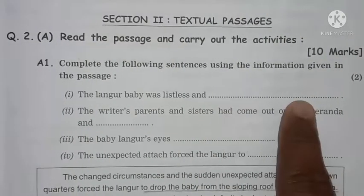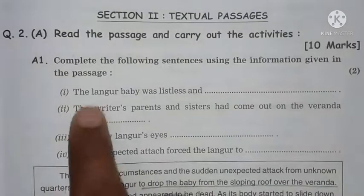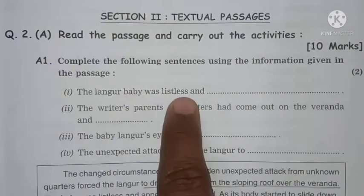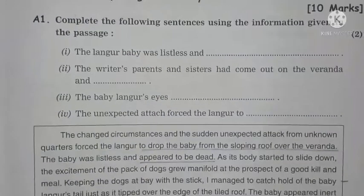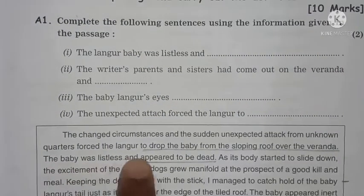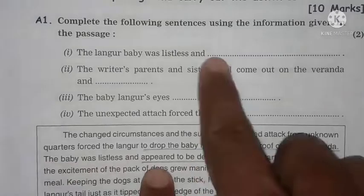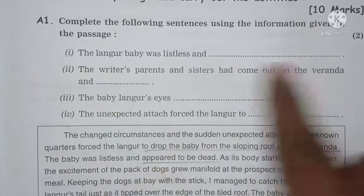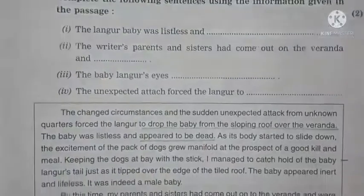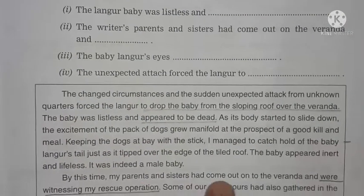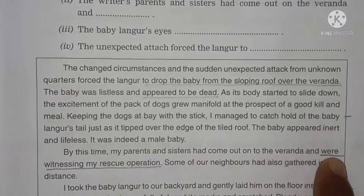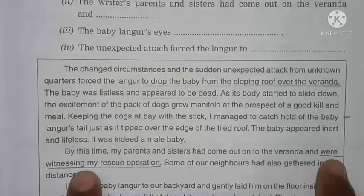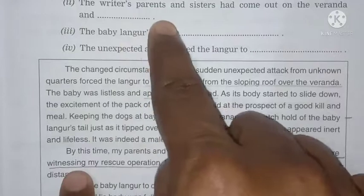So friends, first read the statement: 'The langur baby was listless and appeared to be dead.' So 'appeared to be dead' — note where this answer comes from. The writer's parents and sisters had come out on the veranda and were witnessing my rescue operation. So here the same phrase 'were witnessing my rescue operation' is found in the passage.